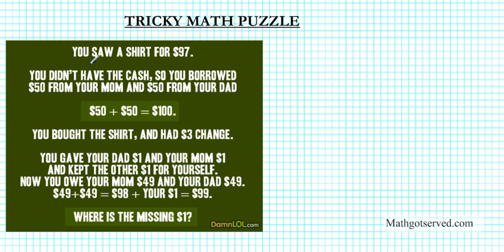It says you saw a shirt for $97. You didn't have the cash, so you borrowed $50 from your mom and $50 from your dad — $50 plus $50 equals $100. You bought the shirt and had $3 change. You gave your dad a dollar, your mom a dollar, and you kept the other dollar for yourself. Now you owe your mom $49 and your dad $49. $49 plus $49 equals $98, plus your $1 equals $99. Where is the missing dollar?